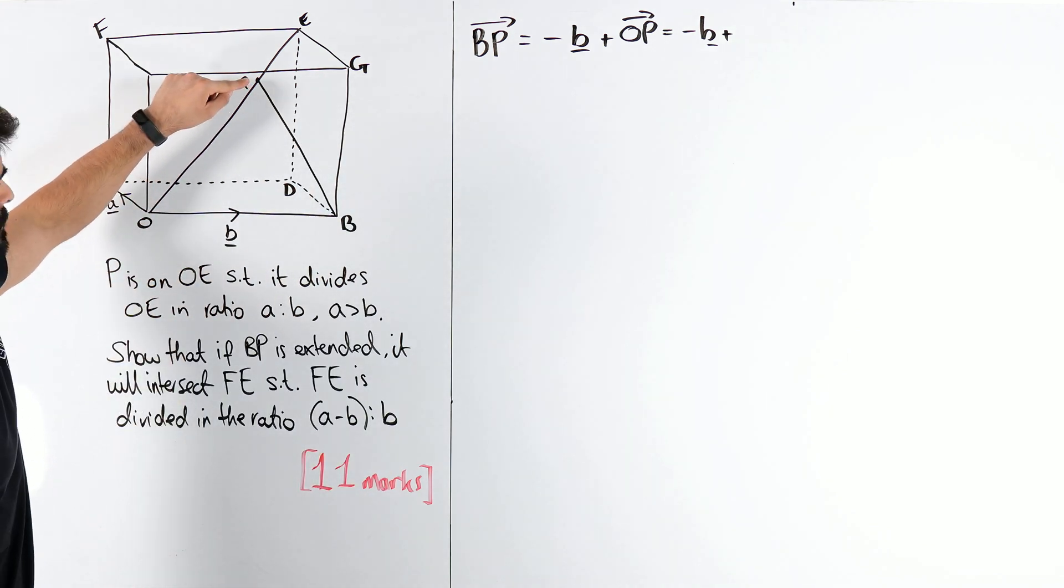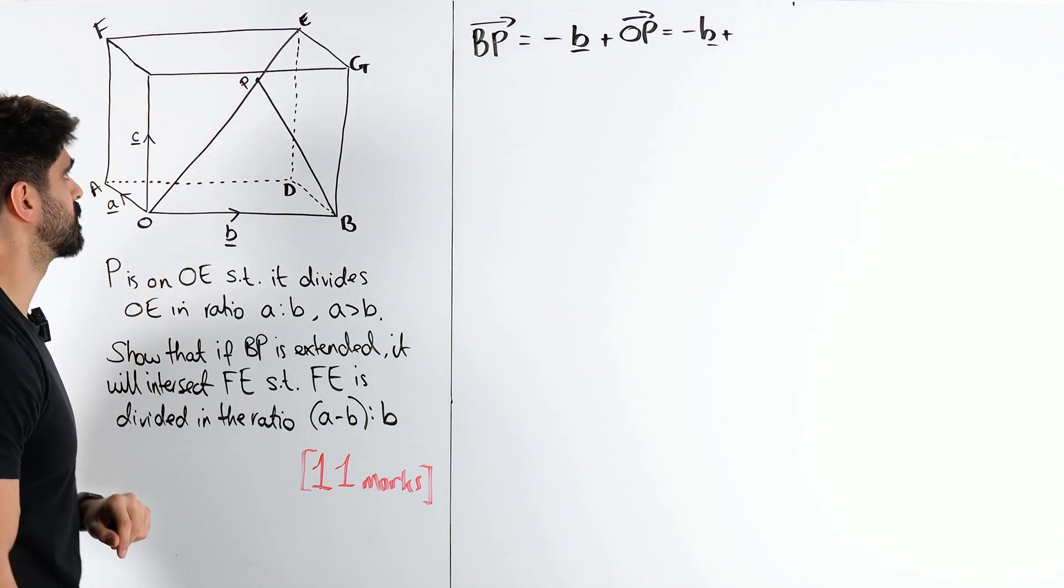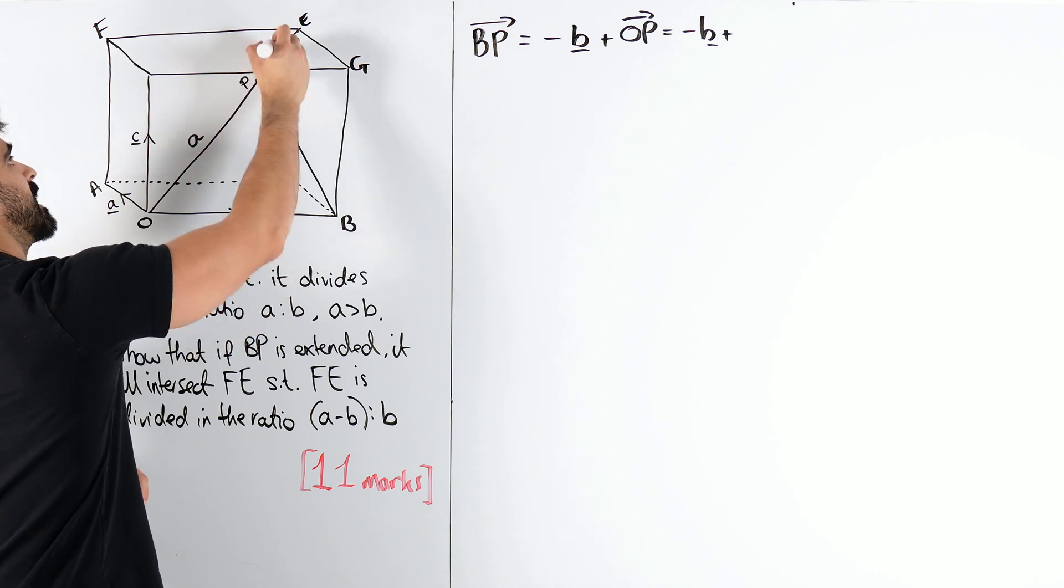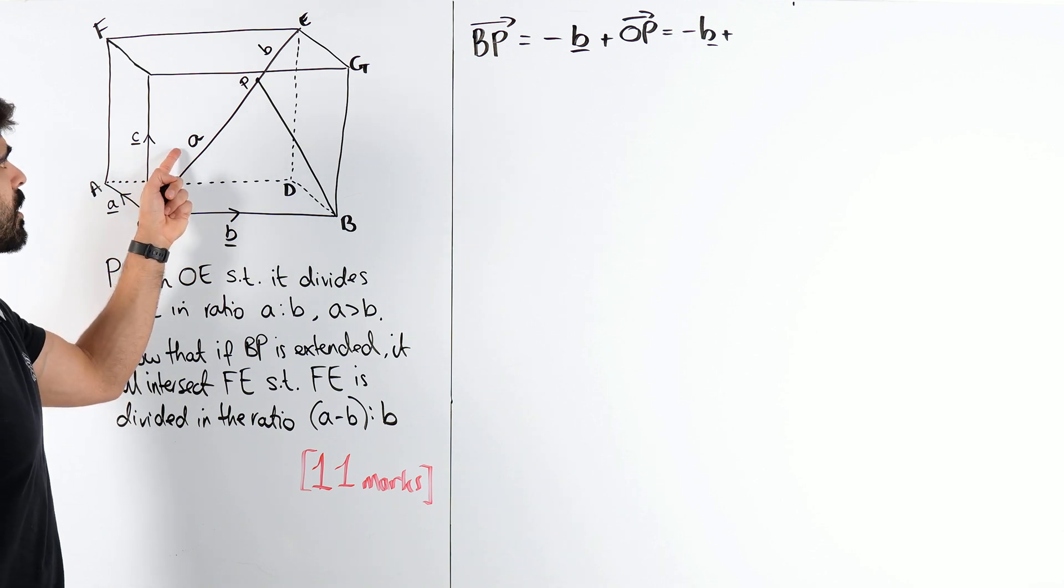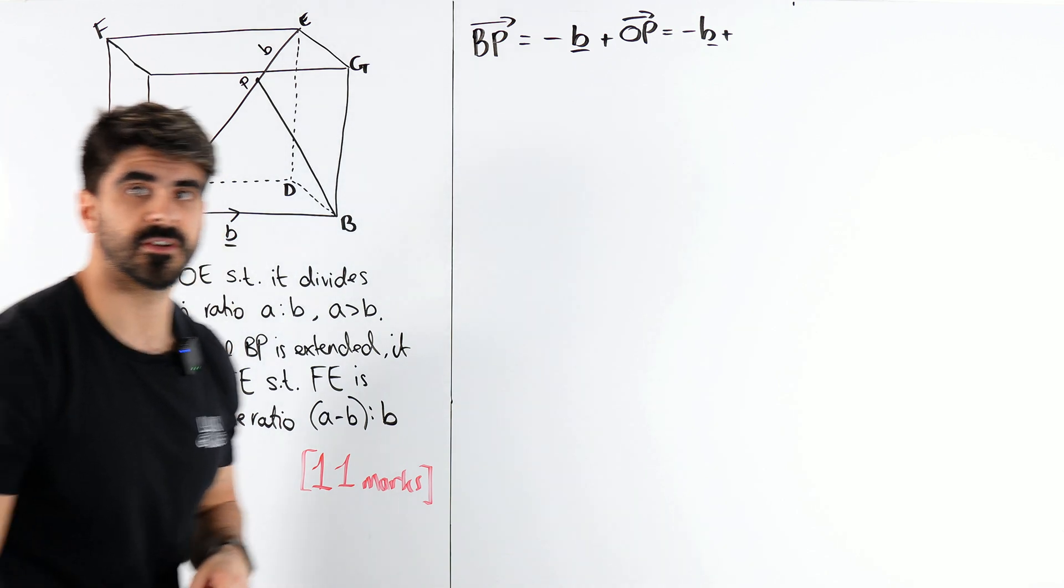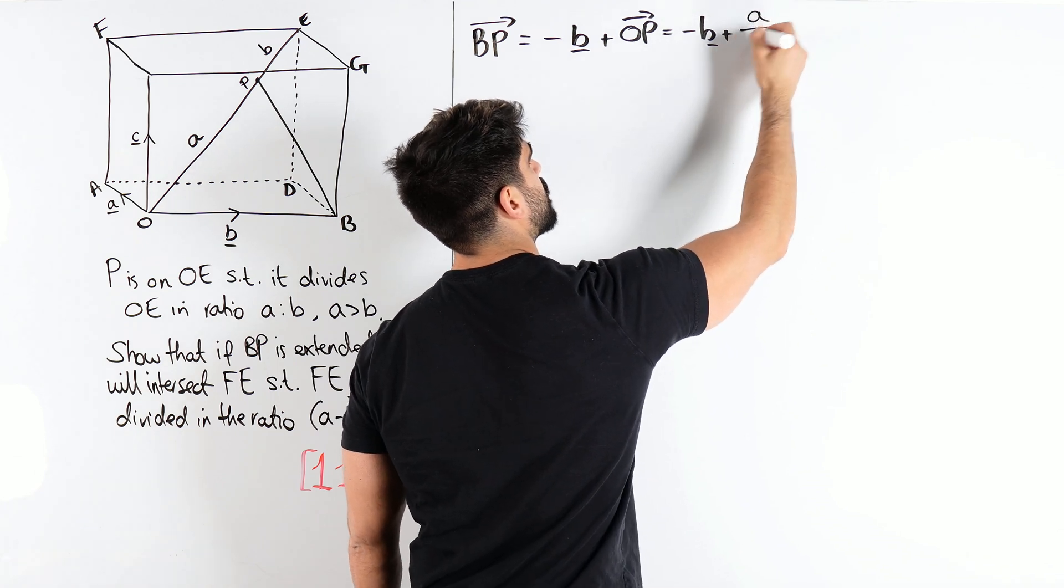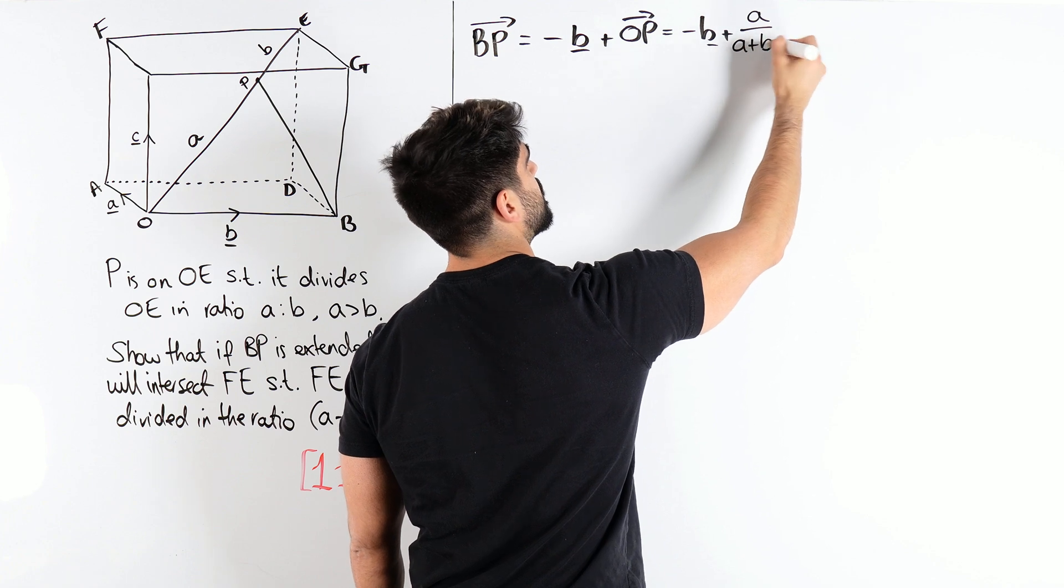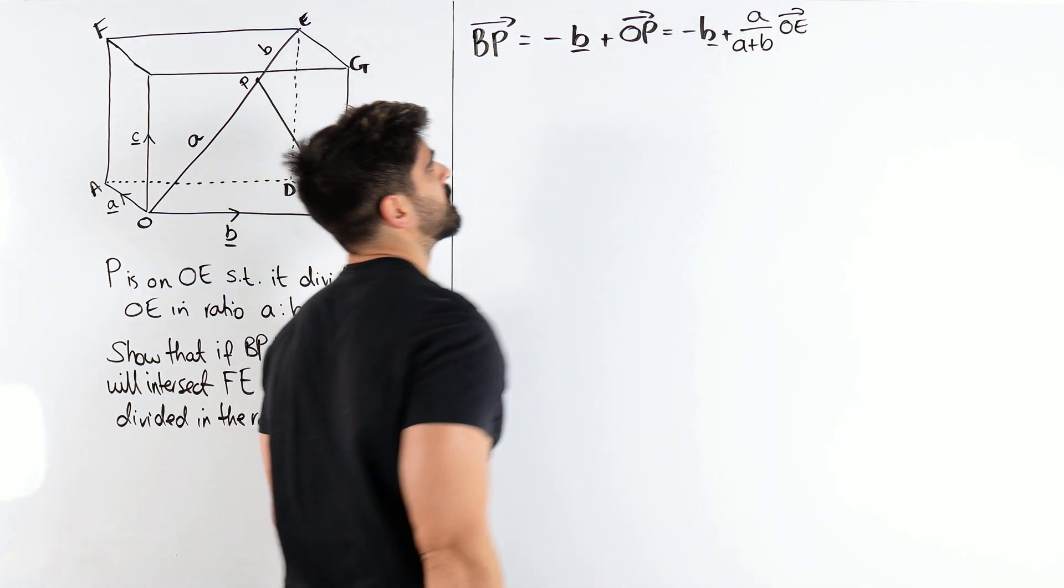Well, O to P is some fraction of O to E, but what is that fraction? Well, remember, the ratio is A to B, right? So, it's going to be A parts out of A plus B. Okay? So, it's A over A plus B lots of OE. Alright?